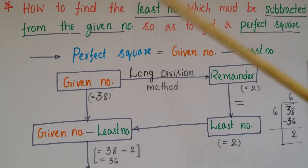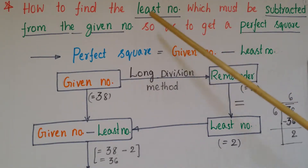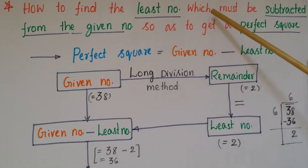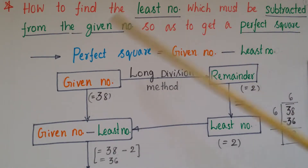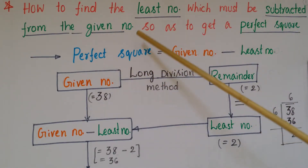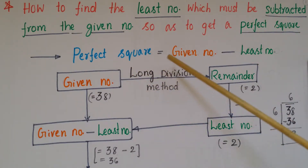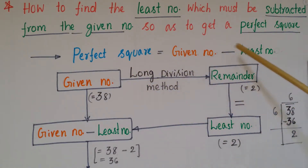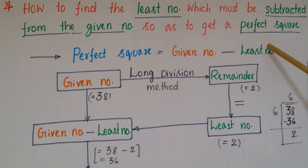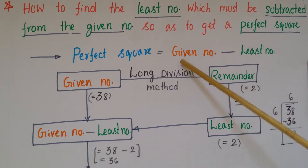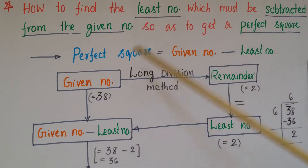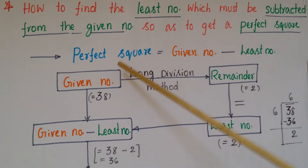Hello everyone. Today I am going to explain how to find the least number which must be subtracted from a given number so as to get a perfect square. We can write this as: perfect square equals given number minus least number. Here we have to find the least number — once we subtract it from the given number, we will get a perfect square.